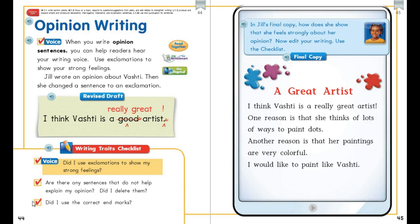So today, what you're going to do is revise and proofread your own opinion piece. Then you are going to make a final copy on a clean sheet of lined paper or in your composition notebook — of why you think, or if you think, Vashti is a good artist or not. And then support your reasons.